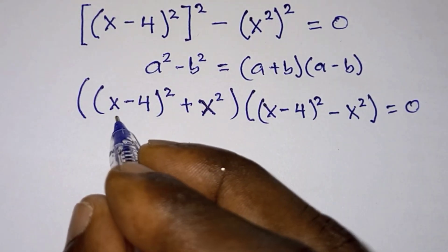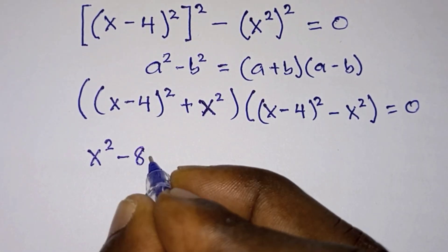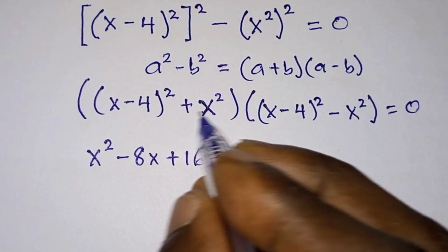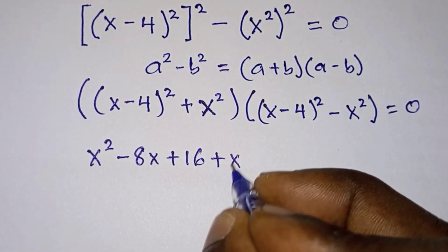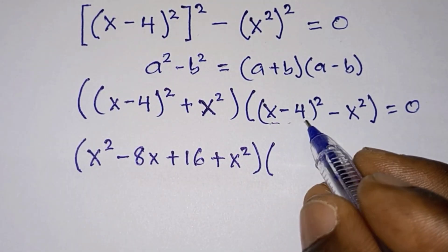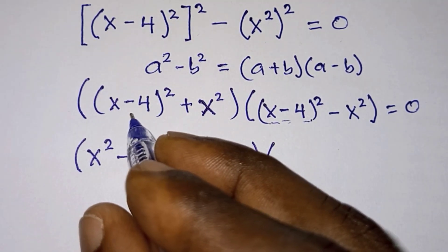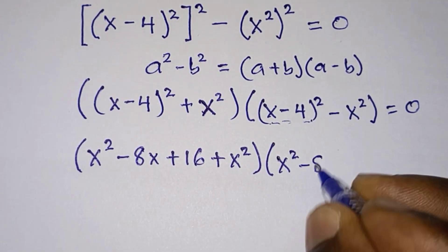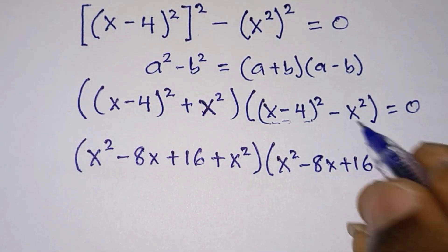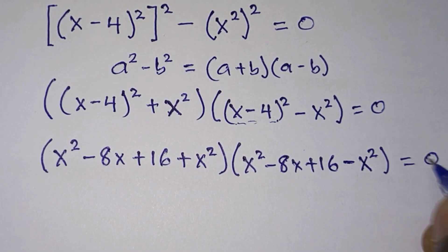So if we expand this, we're going to have x squared minus 8x plus 16 plus x squared. Then let's also expand the second factor. We're going to have x squared minus 8x plus 16, but this time it is minus x squared. And this is equal to 0.